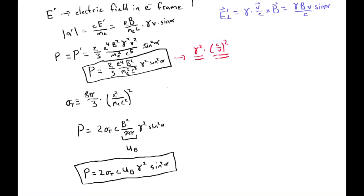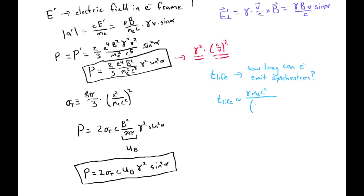Using these expressions, we can estimate timescales. One is the lifetime of an electron emitting synchrotron radiation — how long can it emit before losing its energy. This is roughly the total electron energy gamma m_e c^2 divided by the power radiated. Ignoring factors of order unity, this gives t_lifetime ~ m_e^3 c^5 / (gamma e^4 B^2). Notably, faster electrons decay more quickly, and stronger magnetic fields shorten the lifetime.